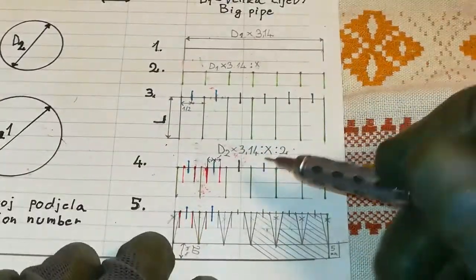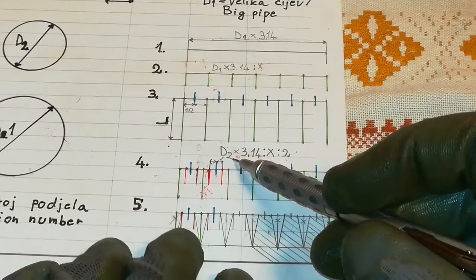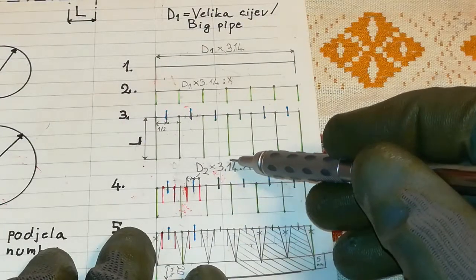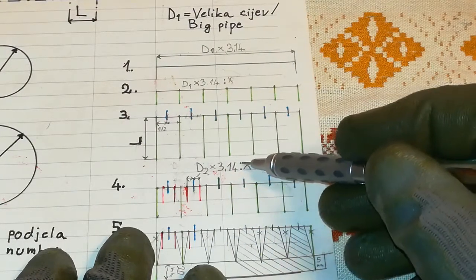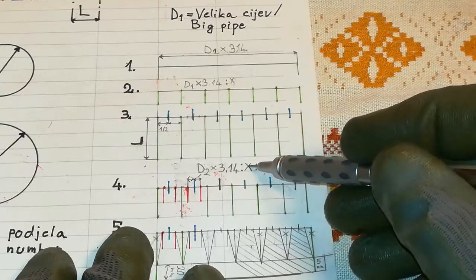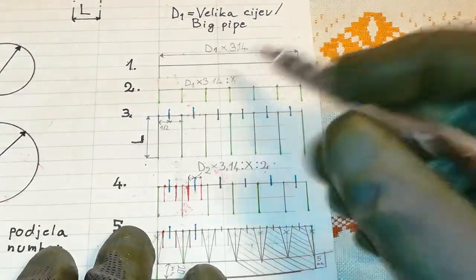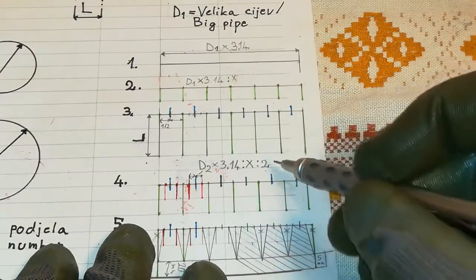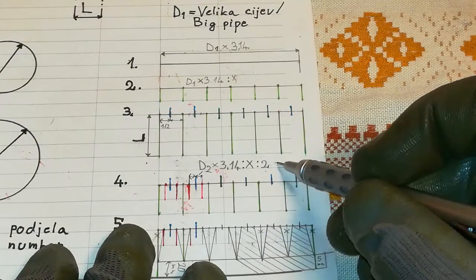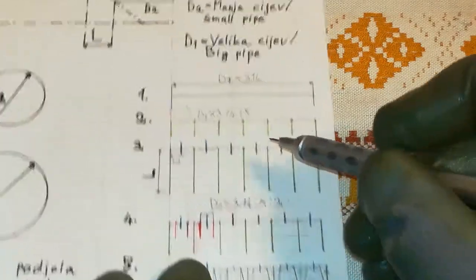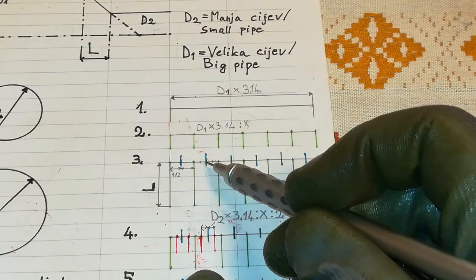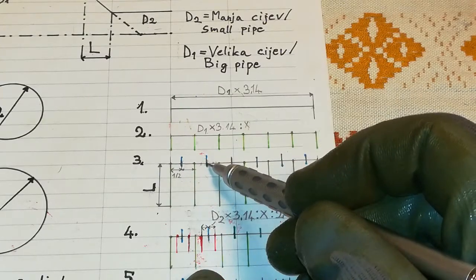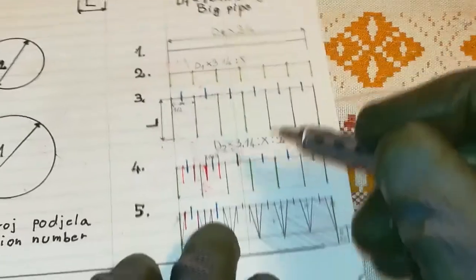After that, we're going to take, in step 4, D2, which is a small pipe diameter, and we're going to multiply it by 3.14. Then we're going to divide it by the same number of divisions as in step 2. And then we're going to divide it by 2. Why 2? Because we're going to take that number that we got from all of this, and we're going to mark the lines on the left and on the right side of these half divisions that we did in step 3.